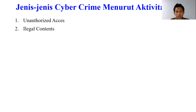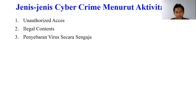Kemudian jenis yang kedua adalah illegal content, yaitu kejahatan yang dilakukan dengan memasukkan data atau informasi ke internet tentang suatu hal yang tidak benar, tidak etis, dan dapat dianggap melanggar hukum atau mengganggu ketertiban umum. Contohnya adalah penyebarluasan pornografi, isu-isu fitnah terhadap individu, dan sebagainya. Kemudian penyebaran virus secara sengaja, yaitu melakukan penyebaran virus yang merugikan seseorang atau institusi dengan sengaja.